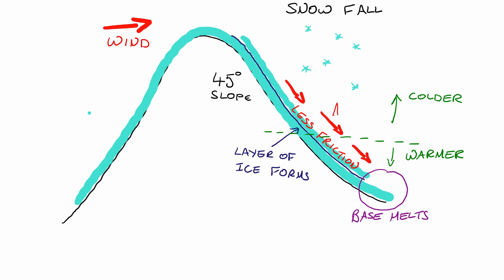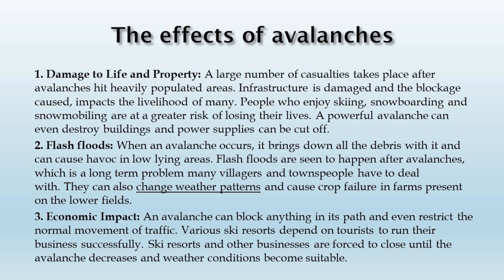The base melting also can increase the chances of this, as can human activities such as vibrations. Finally, we can see the effects that avalanches have. These are normally three different varieties. Firstly, they're likely to cause damage to life and property. They can obviously cause casualties, they can damage houses, they can wash away roads and damage infrastructure, and typically a powerful avalanche can even destroy buildings.